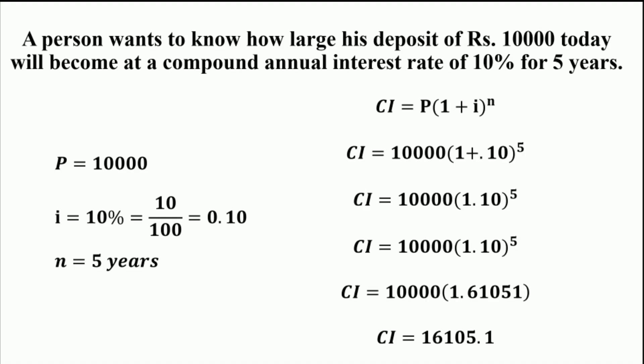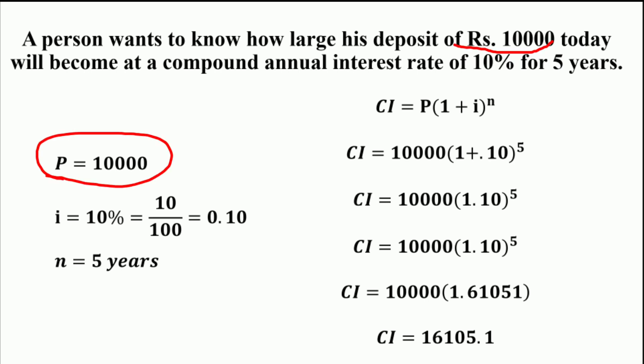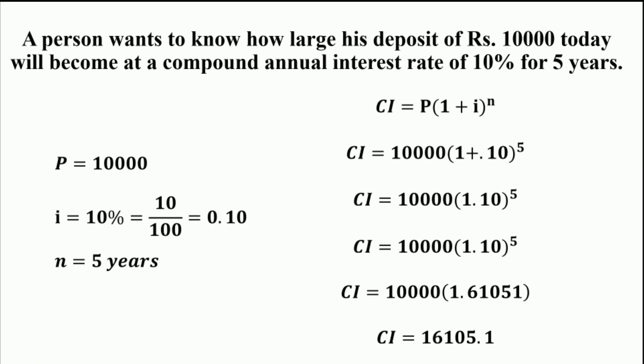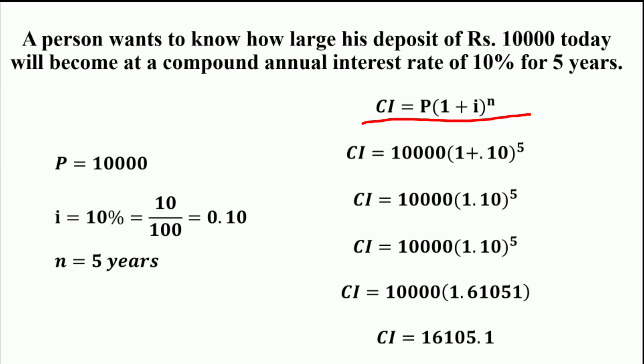As a numerical example, a person wants to know how large a deposit of ₹10,000 today will become at a compound annual interest rate of 10% for 5 years. From the question, P = ₹10,000, the rate of interest is 10% = 0.1, and n = 5 years. Using the compound interest formula FV = P × (1 + I)^n, substituting values gives: FV = 10,000 × (1 + 0.10)^5.